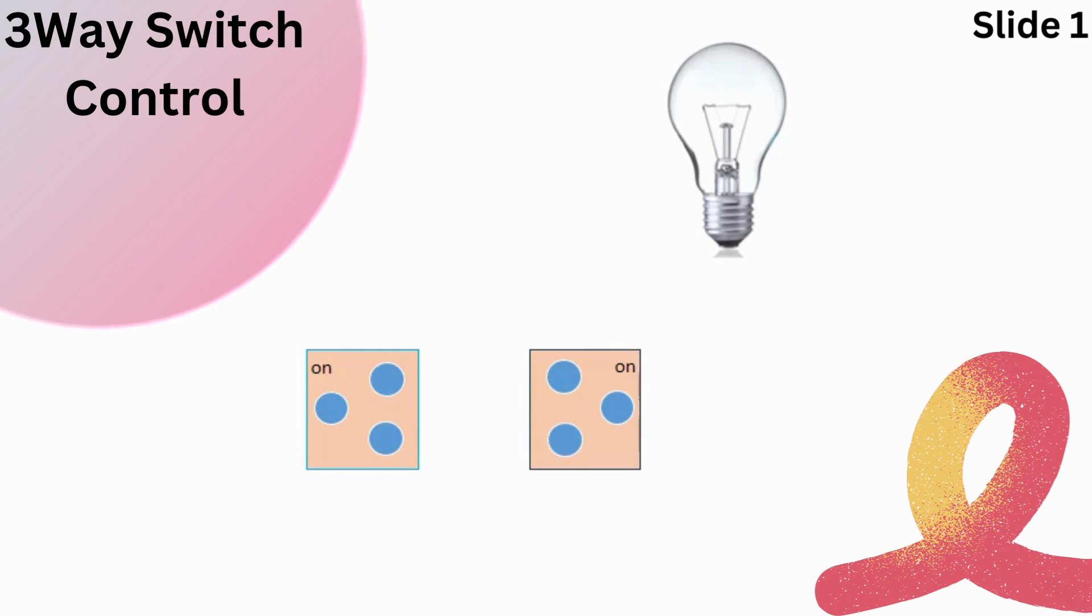When both switches are in the on position, here's how it works. When you flip the first switch to the on position, it completes an electrical circuit and sends power to the common terminal.